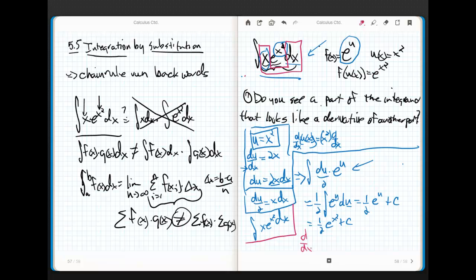If I differentiate 1 half e to the x squared plus c, well, let's see what happens. Now, this is where chain rule is really going to come into play. The derivative of e to the x squared is e to the x squared times the derivative of the blah,